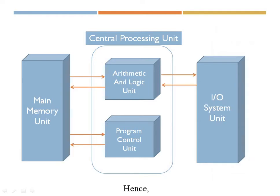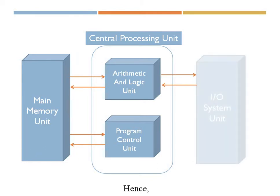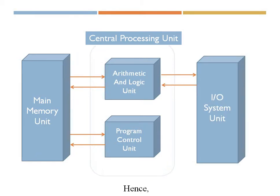So to summarize, the Von Neumann machine architecture consists of three main modules: the main memory, the I/O system unit, and the central processing unit, which includes the ALU and the CU. Now let's move on to the next part where we will look at the interconnections between these components.